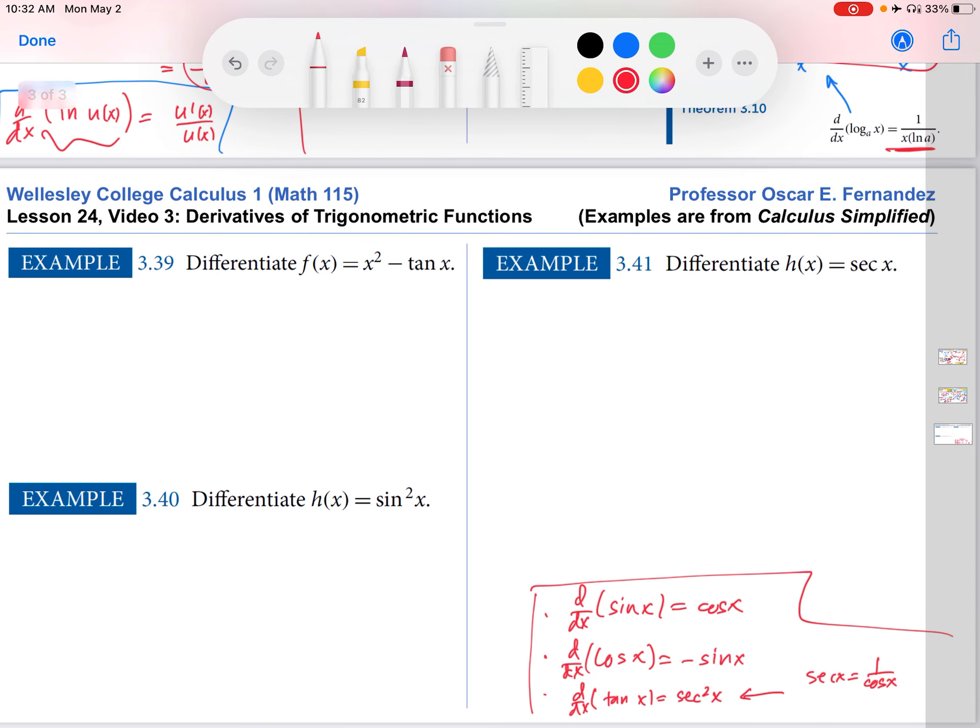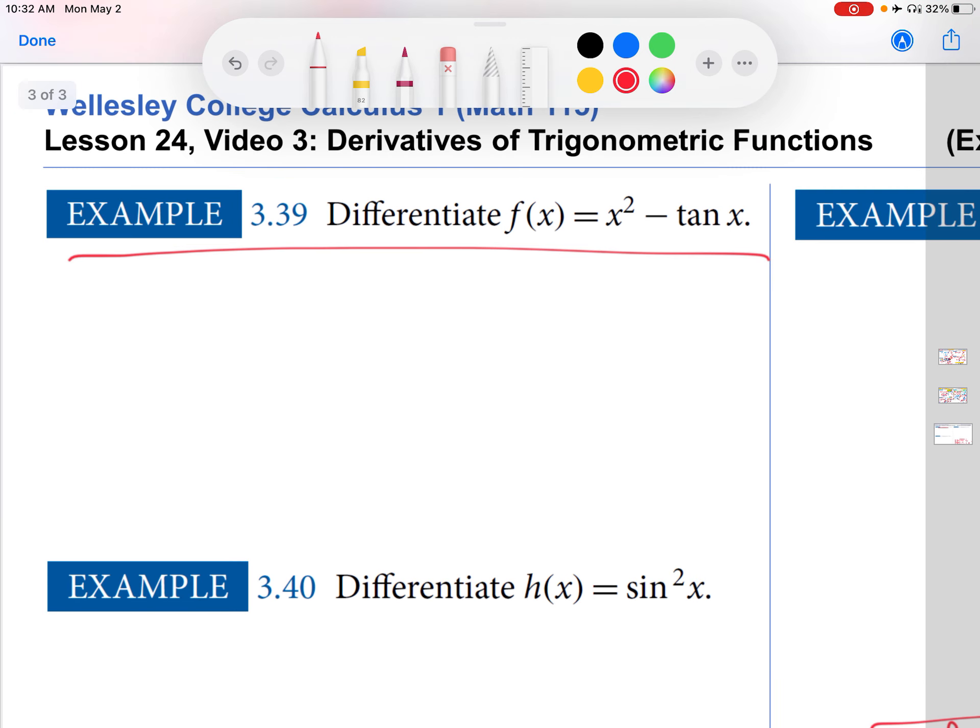Great, so let's take a look at what we're given here. And I guess we'll start off with this first example up here. Zoom in there. So if I want to differentiate this function, what does it look like? Well, it's x squared minus tangent x.